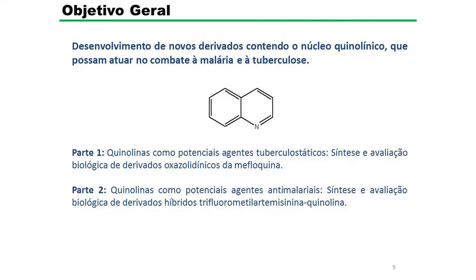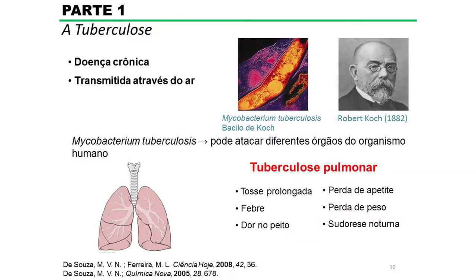Essas substâncias tinham em comum a presença do núcleo quinolínico. Por isso, essa tese foi dividida em duas partes. A primeira parte foi intitulada 'Quinolinas como potenciais agentes tuberculostáticos: síntese e avaliação biológica de derivados oxazolidínicos da mefloquina'. E a segunda parte, 'Quinolinas como potenciais agentes antimalariais: síntese e avaliação biológica de derivados híbridos trifluorometil-artemisinina e quinolina'.